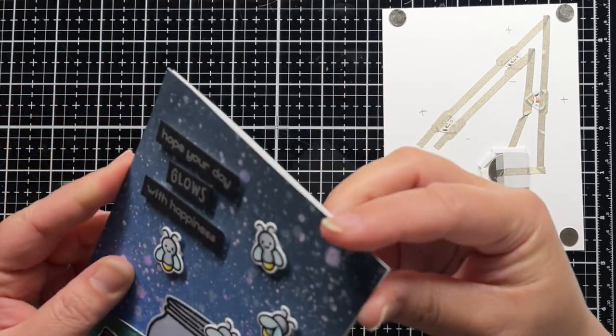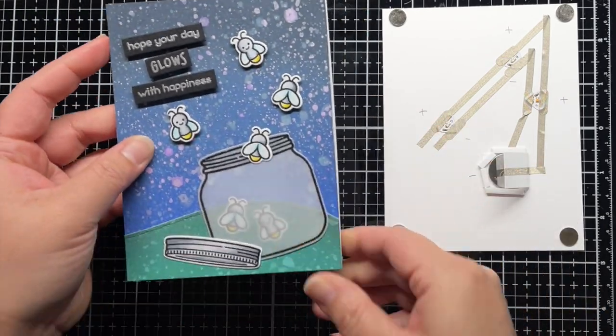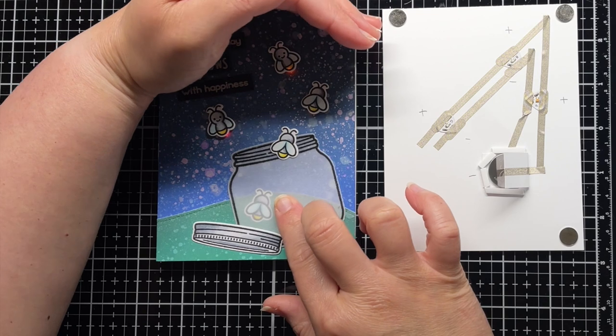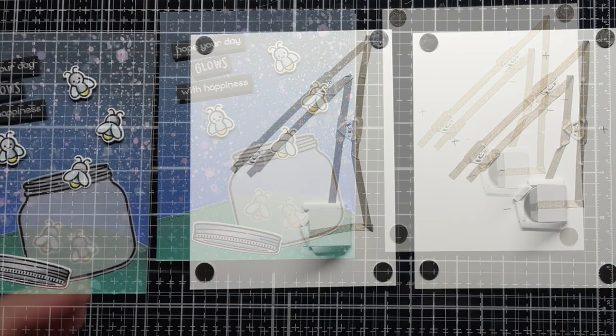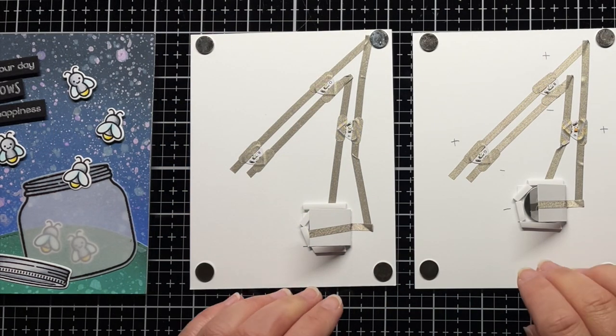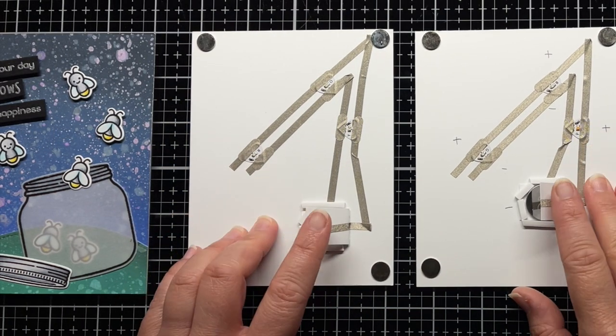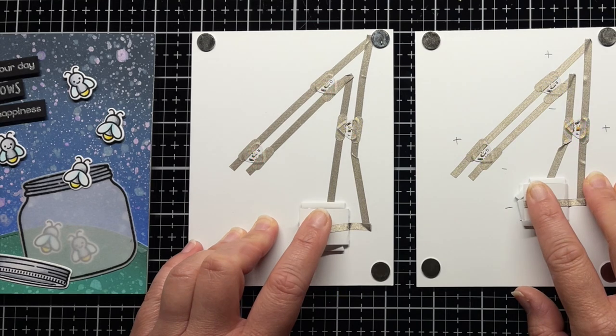Off camera, I created a second circuit panel using our red, orange, and yellow LED stickers, and you can see how those look with the fireflies as well. And here are all our colored lights together. There are lots of beautiful designs you can create using different colored LED stickers.